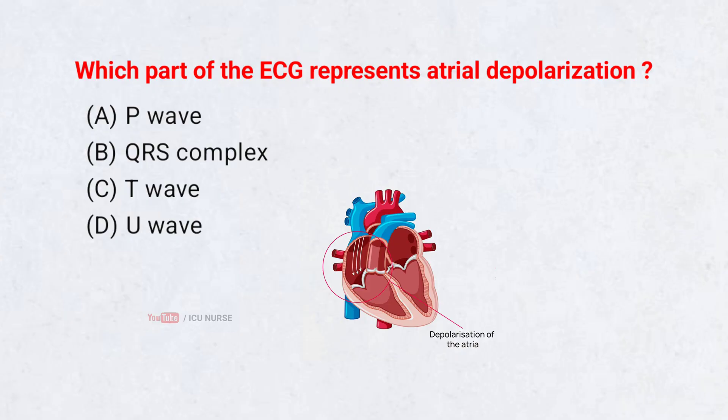Which part of the ECG represents atrial depolarization? Correct answer A: P wave.